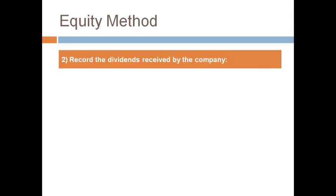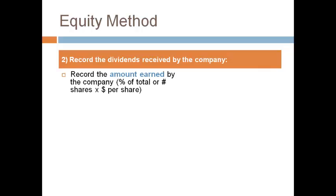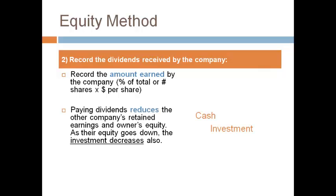The second entry under the equity method is to record the investor's share of dividends. The investor's share is their percent of total dividends declared, or the number of shares they own times the dividend per share. The investor is considered a significant owner, so when cash is paid to the owner, it is considered a return of capital invested. An owner cannot pay themselves a dividend and report it as income on the income statement. Dividends declared reduce the investee company's owner's equity.